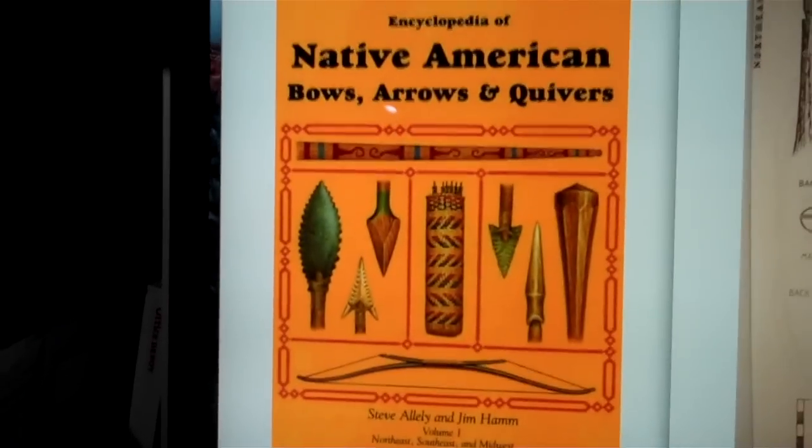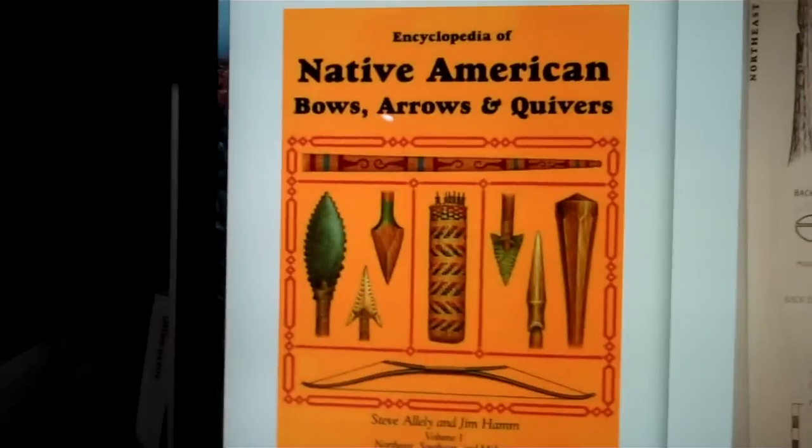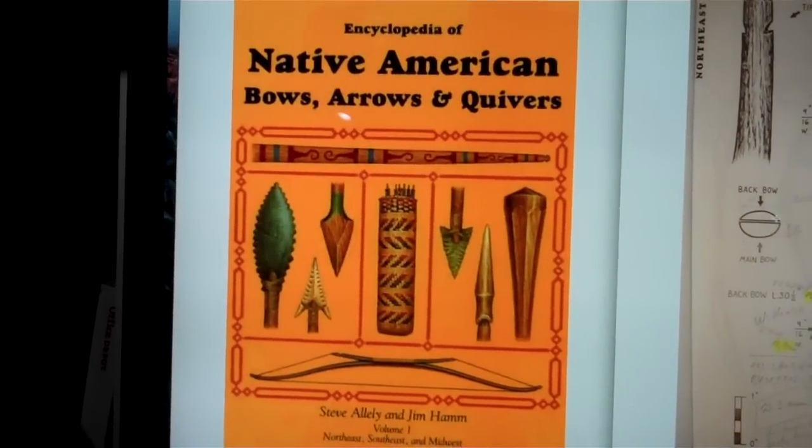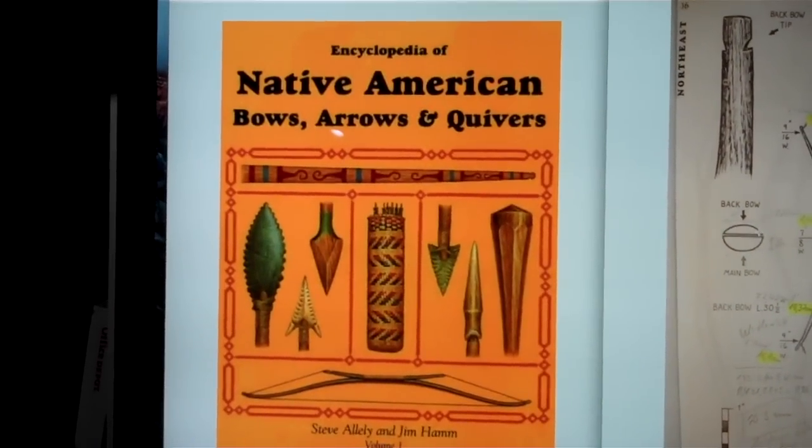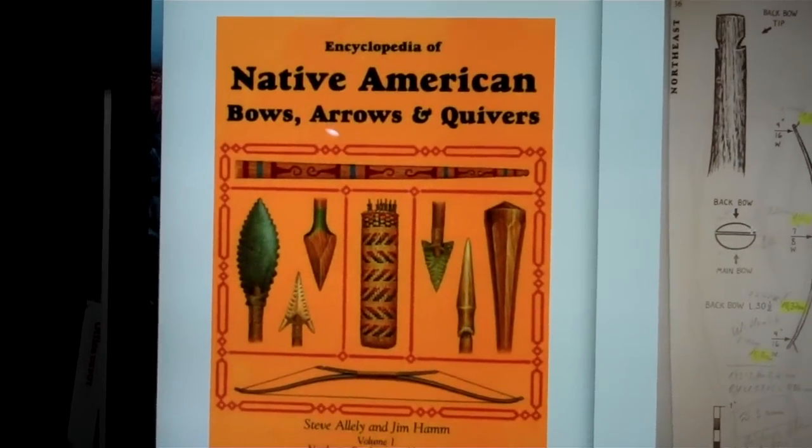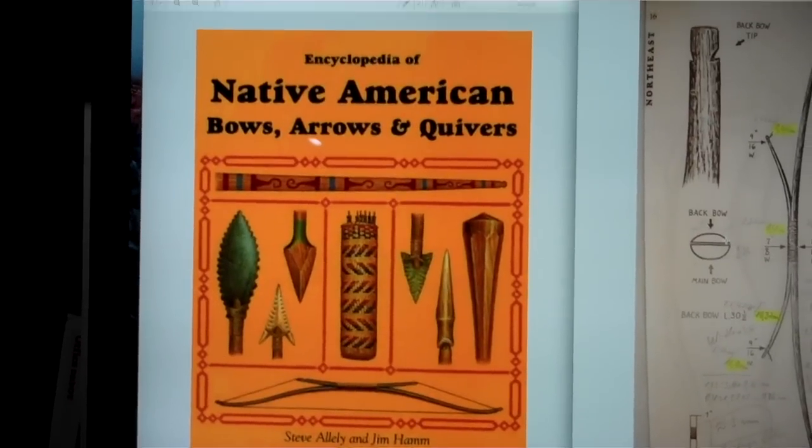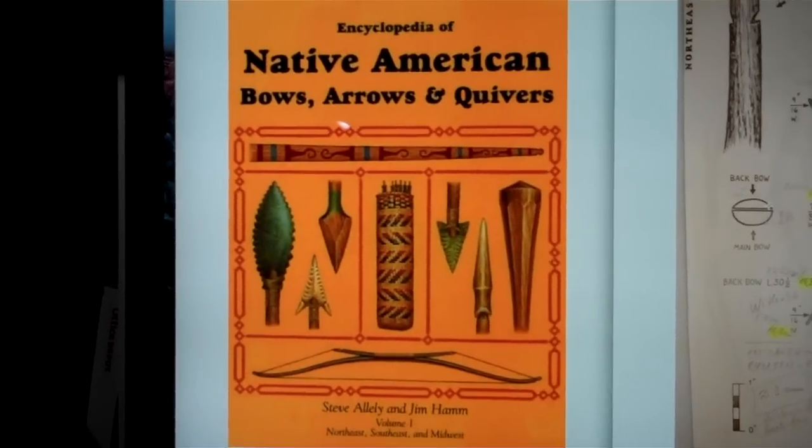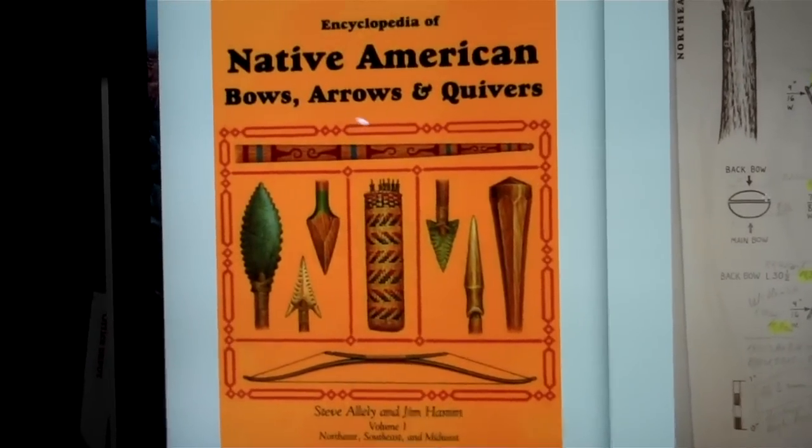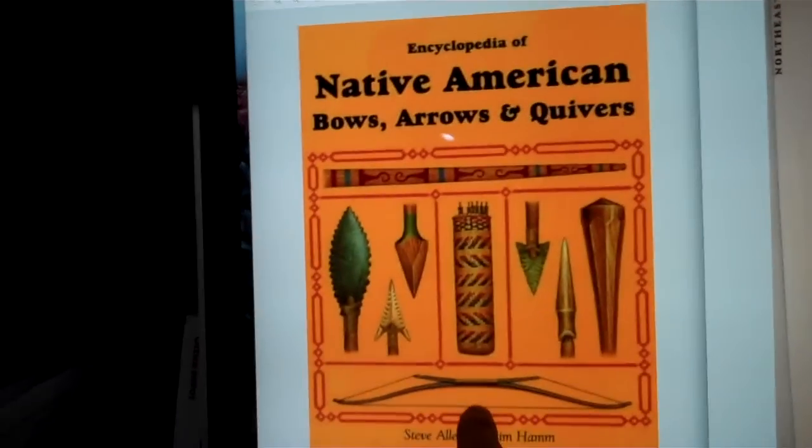Alright, so let's start off with where did I get the dimensions from, what are we looking for. So I'm going to bring the camera over to my computer screen here, where I got this from. Hopefully, you're going to be able to see, let me back up a little. This is the book, Encyclopedia of Native American Bows, Arrows and Quivers by Steve Alaylee and Jim Hamm, volume one, northeast, southeast, and midwest. And within this book, they cover the bows of, you can see it right here, the bows of the Penobscot tribe.